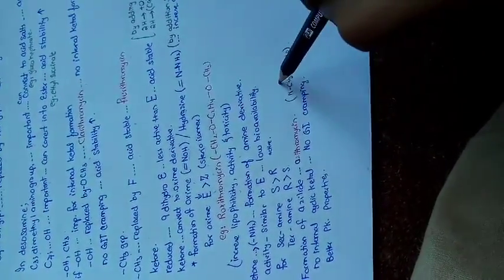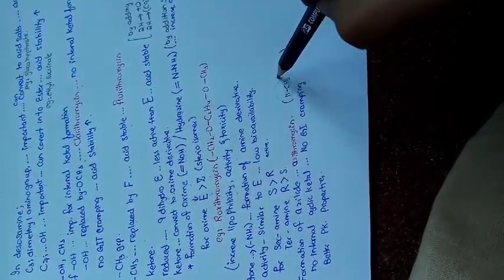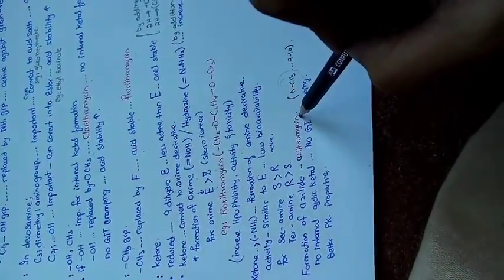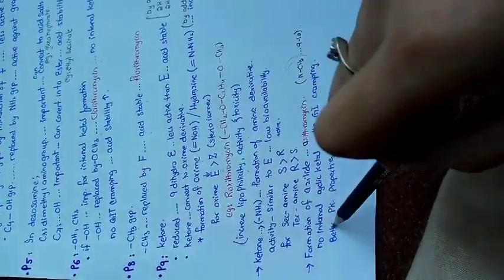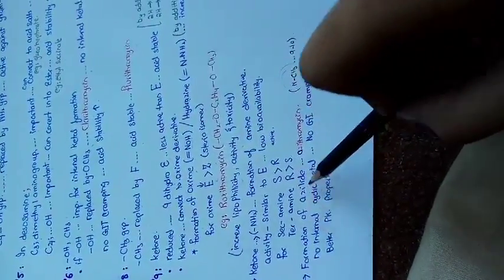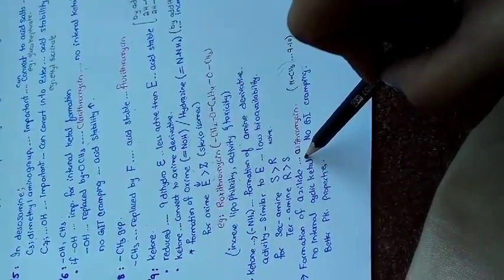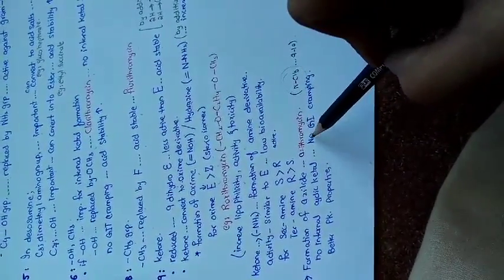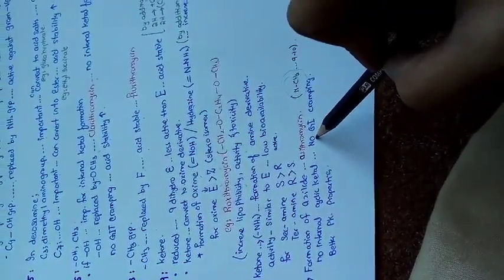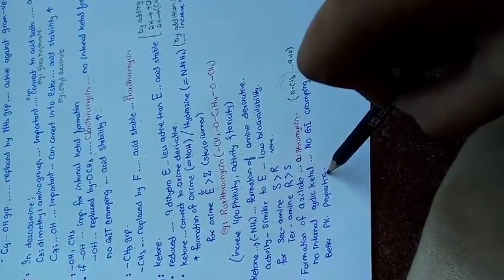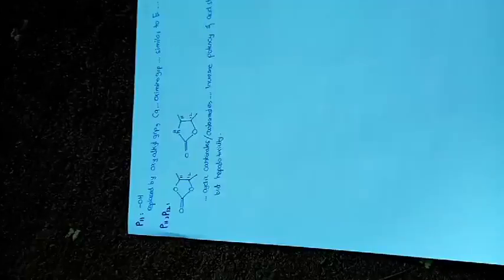If we have this azalide compound, the drug formed is azithromycin, which contains no internal cyclic ketal, so it produces no GIT cramping and has better pharmacokinetic properties.